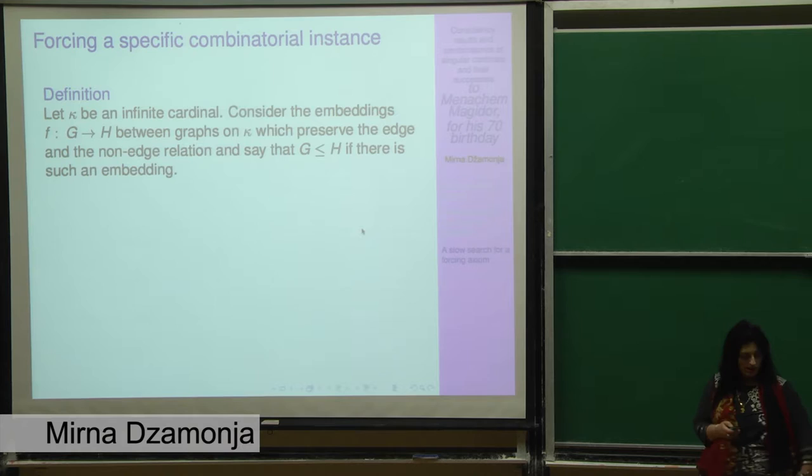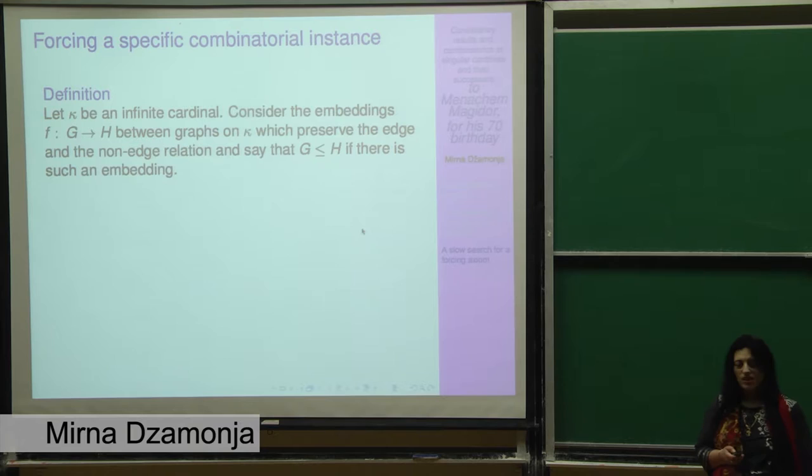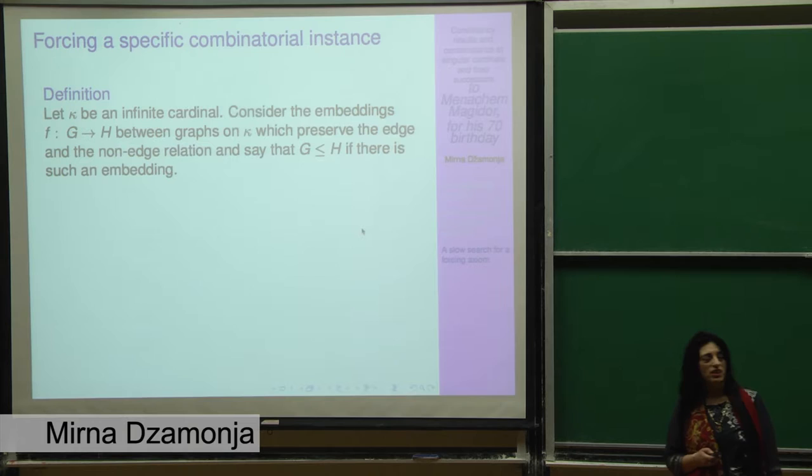Every kappa distributive forcing notion of size kappa has a generic over V. However, what happens is that we can only look at the Q's in V. Well, this looks like the first step of a forcing axiom, but this is not possible in this kind of situation because kappa becomes singular after this extension, already of countable cofinality in VP. So if we have a dream of some sort of forcing axioms, they are rather different than the ones that we know from regular cardinals.